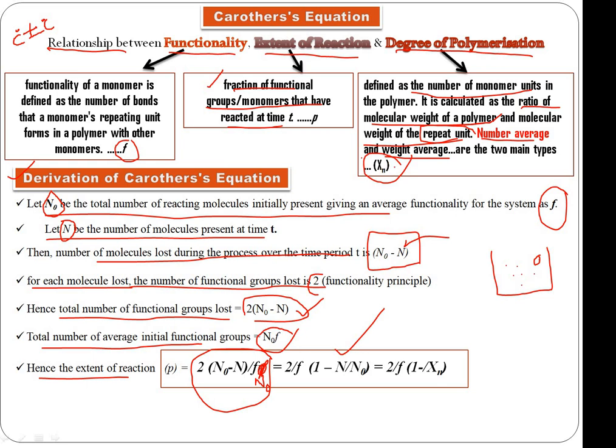Since the average degree of polymerization is the ratio of molecular weight of polymer divided by molecular weight of repeating unit, this is basically Xn.